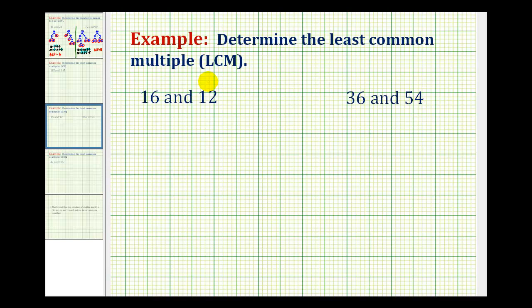There are two main ways of determining the LCM of numbers. One way is to list multiples of each number and then determine the smallest number that the two lists have in common. The other method is to use the prime factorization of the given numbers.